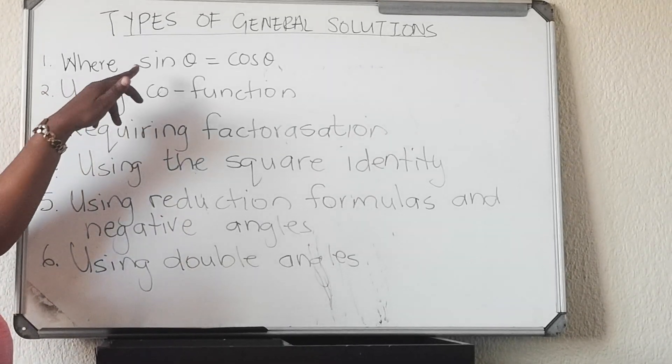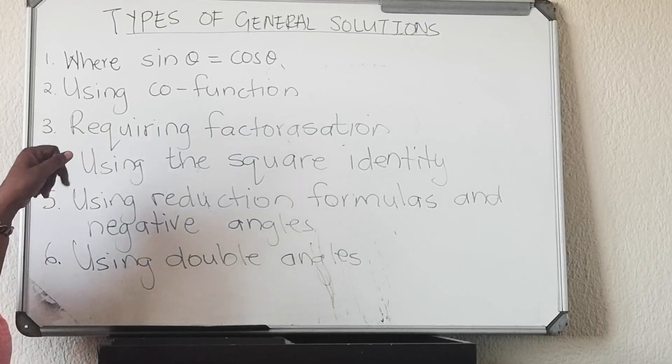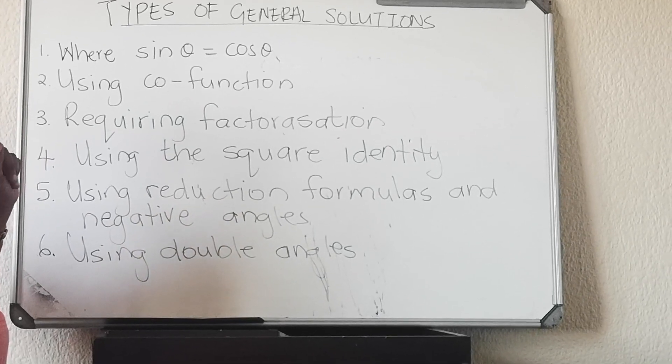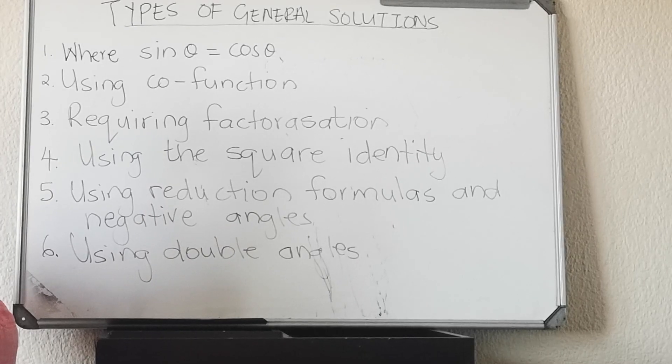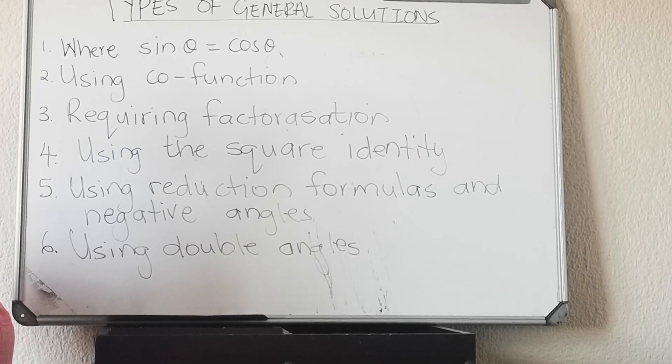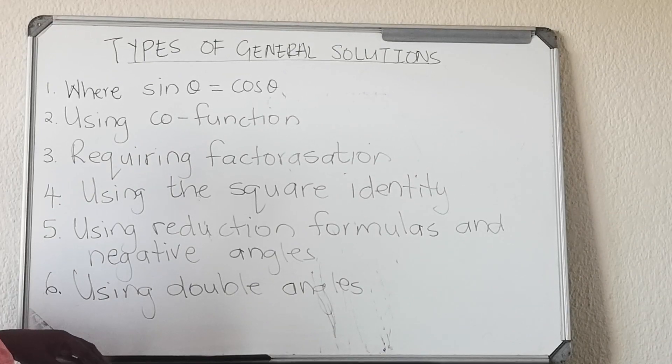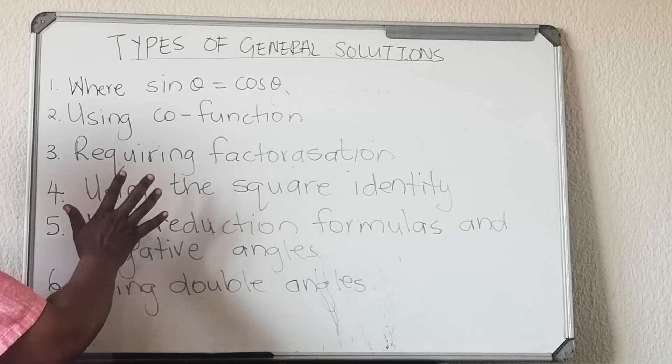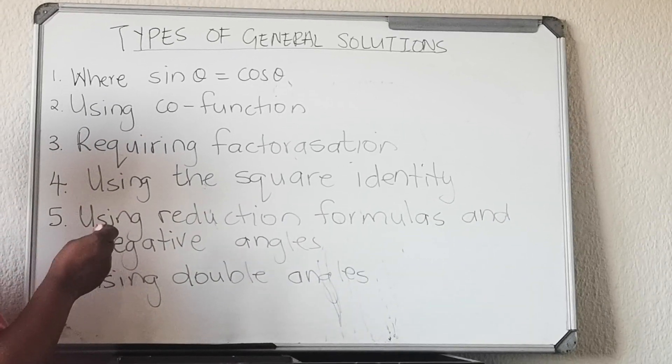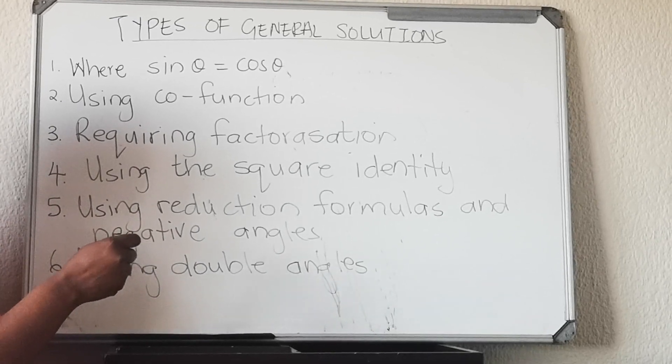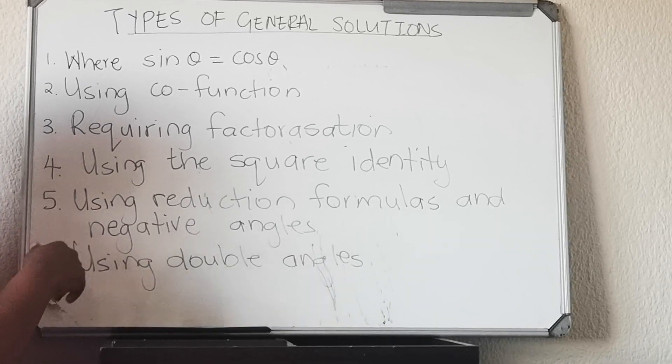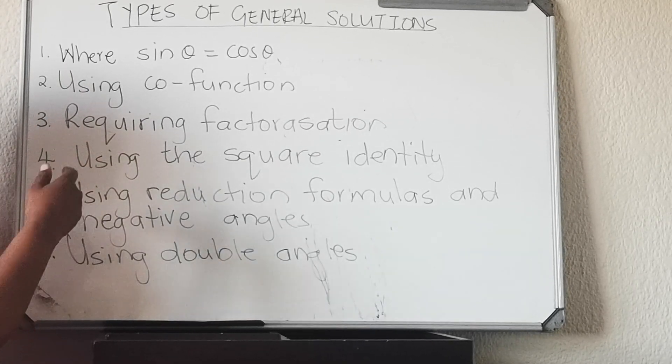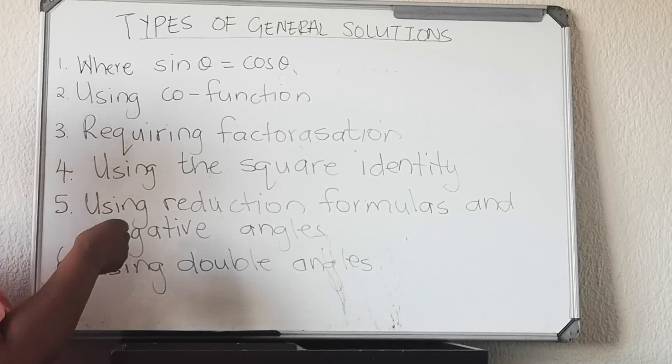The first one is where sin θ equals cos θ. The second one using co-functions. The third one requiring factorization. The fourth one using the square identity. The fifth one using reduction formulas and negative angles. And the sixth one for grade 12 using double angles. Now it is very important to know when you get a question, you look at a question and you decide which one is it, because you use different methods to solve them.